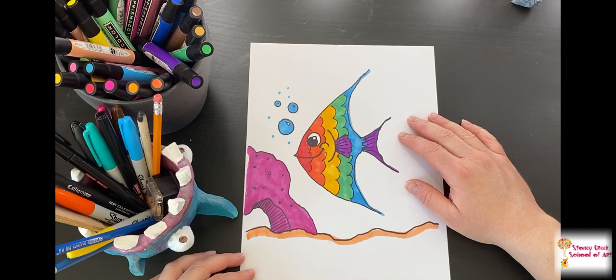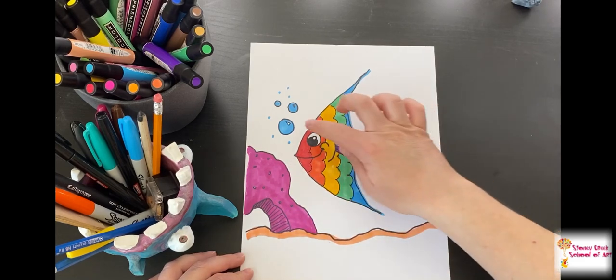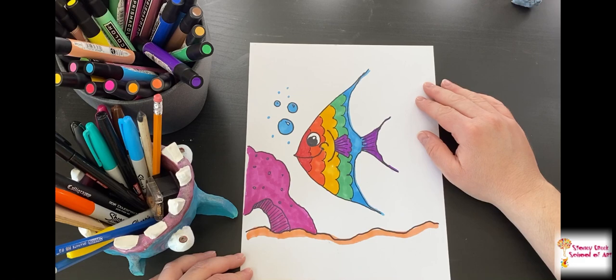There you have it—a beautiful rainbow angelfish in the water with some coral, peachy sand, and cute little bubbles. Hope you're having a great day. I can't wait to see what you post. Tag me on Instagram at Stony Creek School of Art. Until next time, bye!